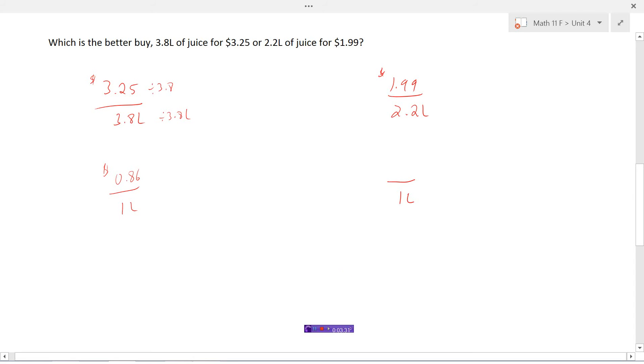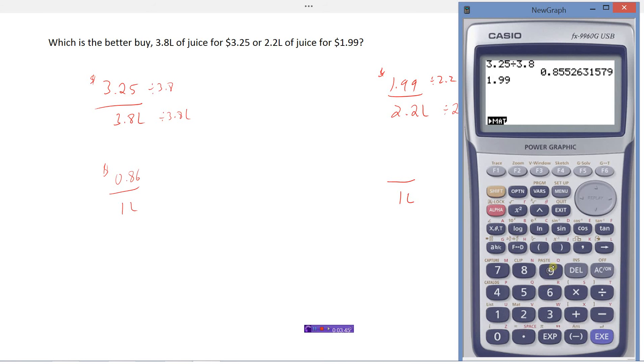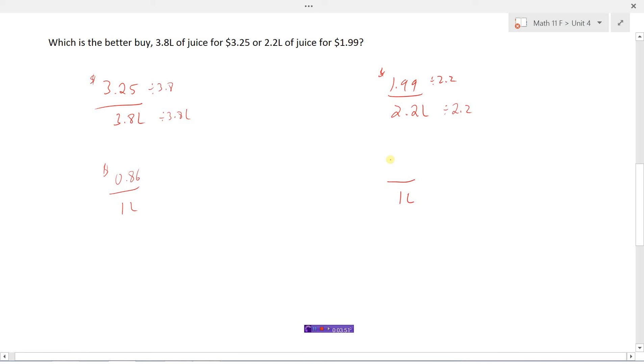Let's check out the other one here. So on this one I'm going to have to divide by 2.2 to get the denominator down to 1. 2.2 divided by 2.2 would be 1. So $1.99 divided by 2.2 is 90 cents. So we can see that this is the best buy because it is cheaper, 86 cents versus 90 cents. But we had to get them down to unit rates so that we could compare them.